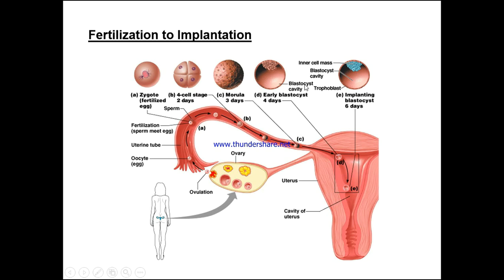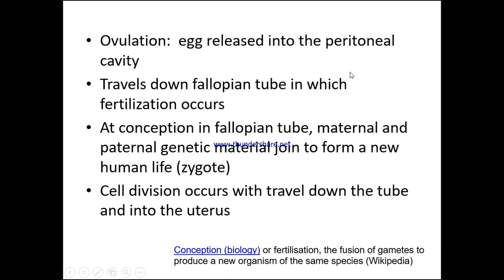As we continue on, we follow through into the uterus and eventually into the cavity of the uterus, we have this implanting blastocyst at around six days. Within the blastocyst we can see the cavity, the trophoblast, and the inner cell mass. At conception, maternal and paternal genetic material join to form a new human life — a zygote. Cell division occurs with travel down the tube and into the uterus.